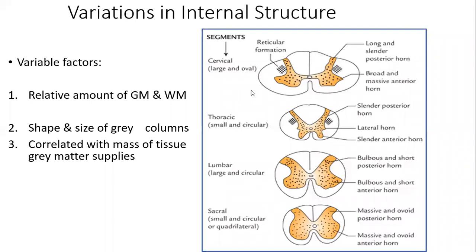Gray matter is greatest in the cervical and lumbar regions because it supplies the main bulk of muscles in the upper and lower limbs. White matter actually increases in amount from inferior to superior — from the lower levels of the spinal cord upward.